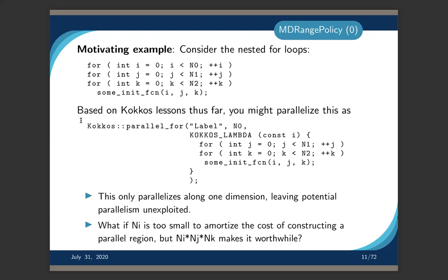So why do we want MDRangePolicy? Often in codes we have tightly nested loops — two, three, four dimensions — where you call some function inside the loop body. With what we've covered in modules one and two, you might just parallelize the outer loop with parallel_for. The problem is this only parallelizes one dimension, leaving parallelism unexploited. In particular, if N0, N1, and N2 are each 100, on a CPU that might be fine, but on a GPU parallelizing over just 100 is not enough — you need around 100,000-way parallelism to get good performance.